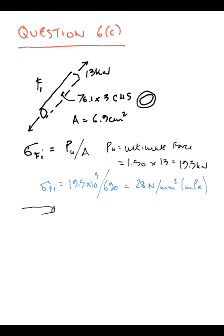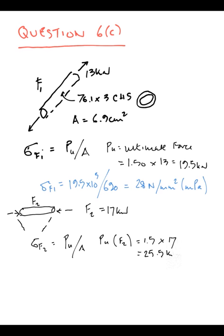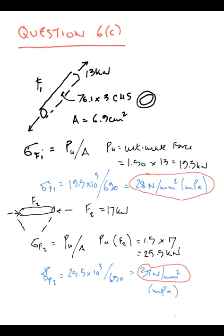We work it out as an ultimate load of 19.5, this gives us stress of 28 N per millimetre squared. The force in the top chord is 17 kN, ultimate is 25.5, and P over A, which is force over area, gives you 37 N per millimetre squared for the top chord in the truss. This is in compression, and this will be the critical condition for buckling checks.